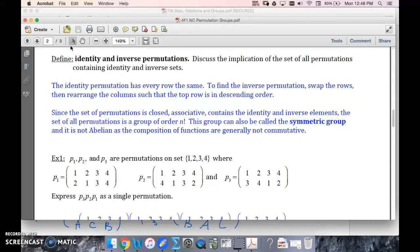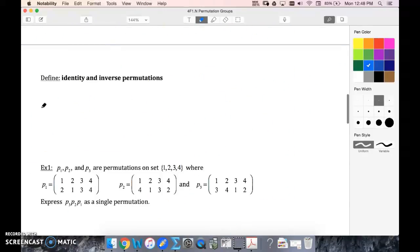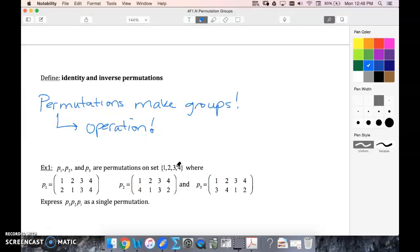So here, our group would be our set of values. Now that I can't write on this, let's see. So permutations make groups. So the operation here is the permutation. Finding all the permutations, those are our operations, and the set of values is whatever your set of values is.